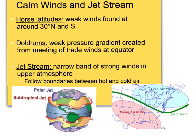Now for our calm winds. The first calm wind is the horse latitude, located at about 30 degrees north and 30 degrees south of the equator. It's just a band of weak winds. The doldrums is the other area of weak winds, found at the equator, and it's weak there because of the convergence of the trade winds.